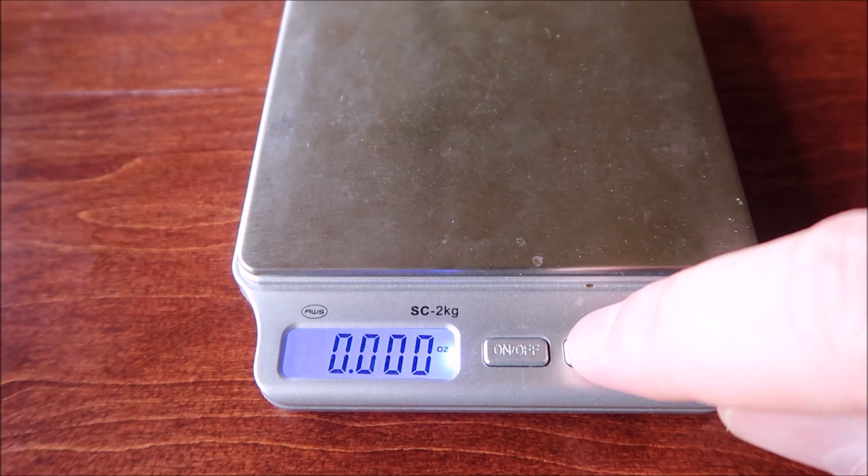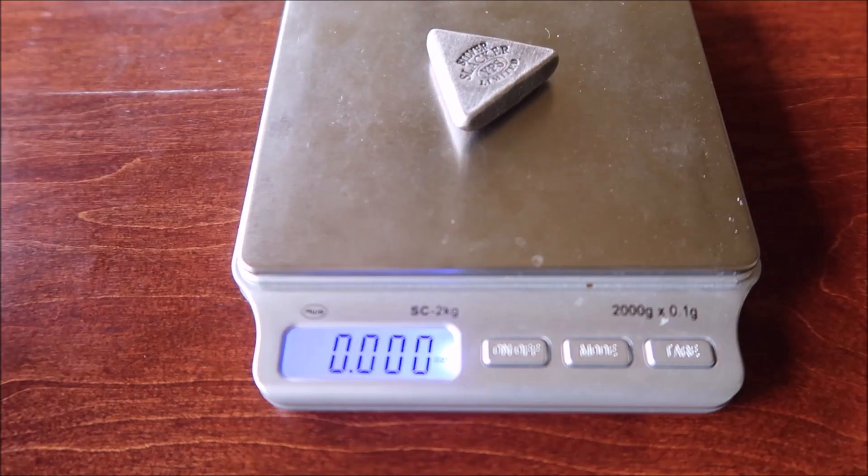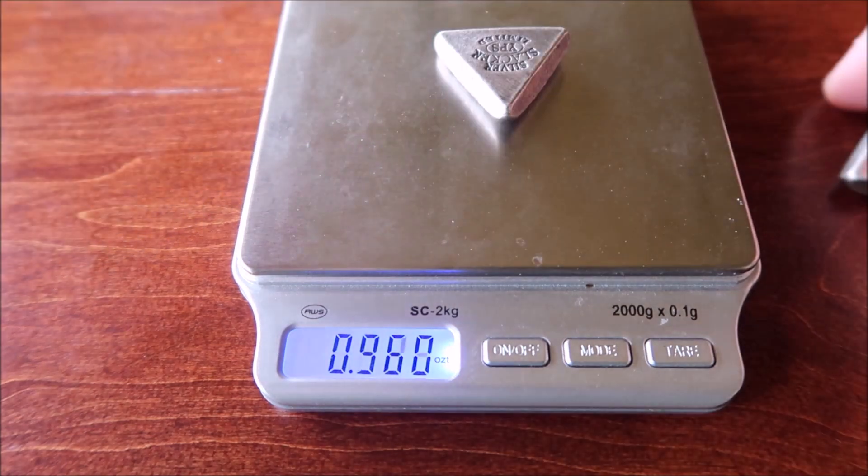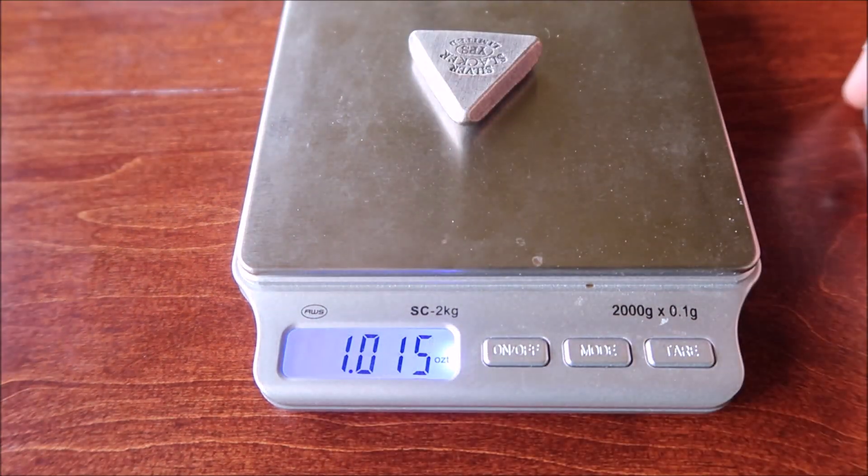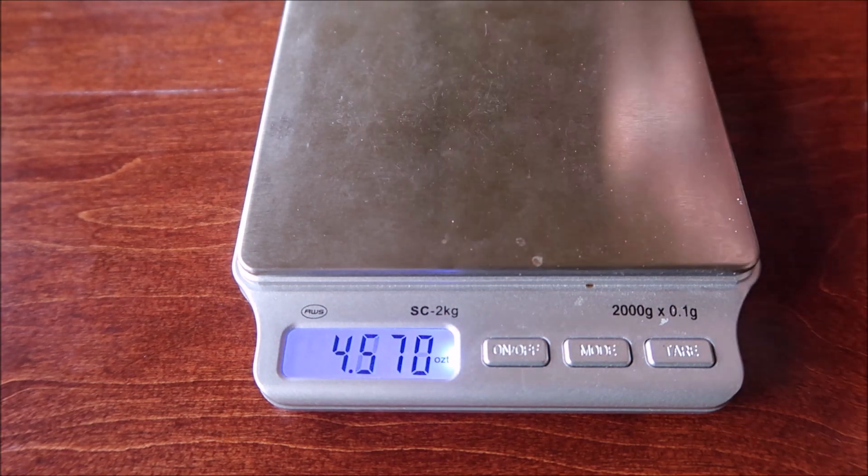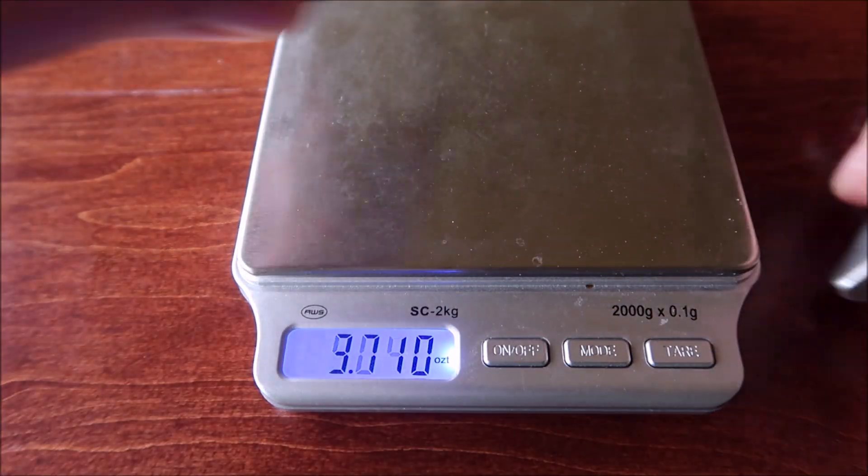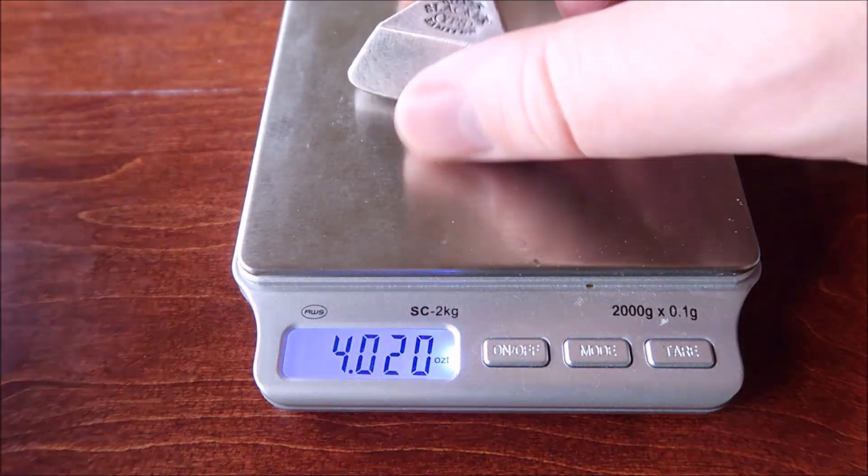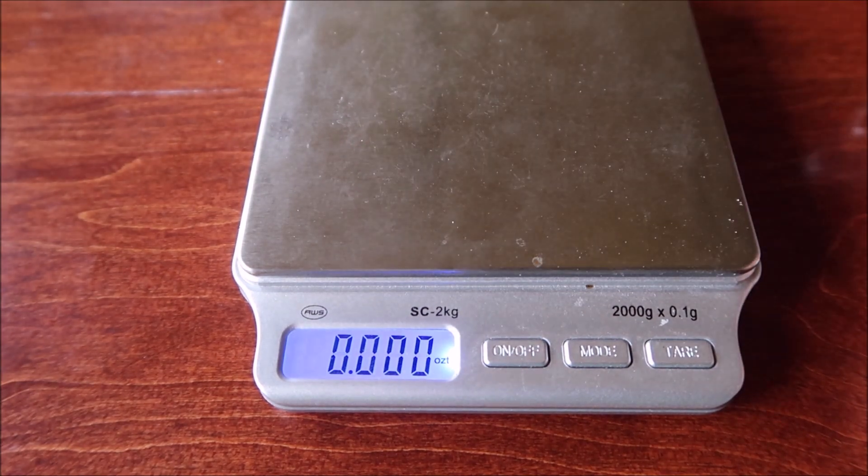Let's do the one ounces first. So 1.01, good. 1.015, good. And 1.015, good. All right, four ounces. Boom. 4.04, 4.02, 4.025. So awesome.